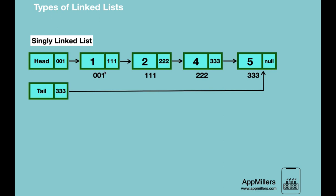The second node's physical address is 111 and it is stored in the first node. In the second node, we have the third node's physical address, which is 222. This type of linked list is the simplest form, in which each node stores data and refers to the next node. As mentioned previously, it gives us flexibility of adding and removing nodes at runtime.